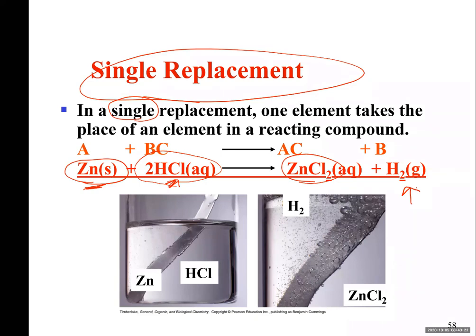If you react a single element with a binary compound, there is going to be single replacement. That means the single is going to replace one of the atoms in binary compound. And that atom which is replaced is going to be free. And again, equation must agree with the observation. How do we know hydrogen is replaced? Because see, hydrogen is coming off. Hydrogen is not partnered with Cl anymore. It's coming off. So it's the hydrogen which is replaced by zinc.